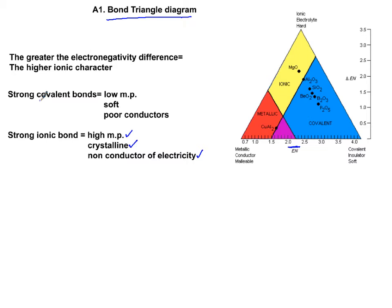If you are strongly covalent bond, then you should have low melting point, you're soft, and then you're poor conductors of both electricity and heat.